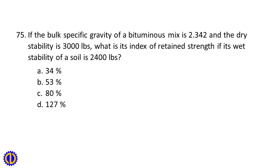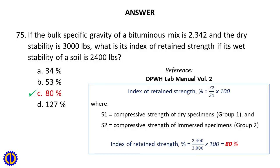Question 75. If the bulk specific gravity of a bituminous mix is 2.342 and the dry stability is 3,000 pounds, what is its index of retained strength if its wet stability is 2,400 pounds? A. 34%, B. 53%, C. 80%, D. 127%. Answer: C. 80%. Reference: DPWH Lab Manual Volume 2. Index of Retained Strength equals compressive strength of immersed specimen divided by compressive strength of dry specimen times 100.